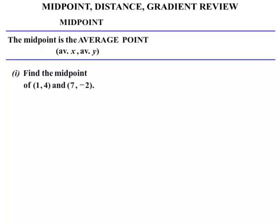Let's look at an example. We're asked to find the midpoint of (1, 4) and (7, -2). The midpoint equals the average X and the average Y value. For the average X value, we take our first X value and our second X value, add them: 1 plus 7, then divide by 2.